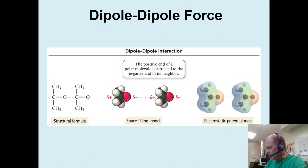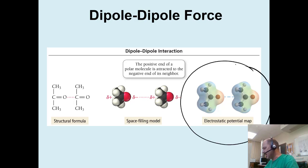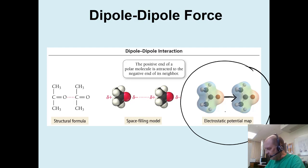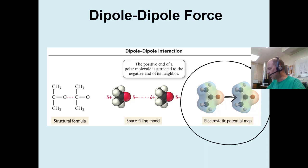Here are two acetone molecules drawn side by side. The best ones to look at are the two electrostatic potential maps, because you can really see how these two molecules orient themselves from the negative to the positive end. That's true for any kind of dipole-dipole interaction. So they stick to each other, and obviously you have more than two, so you get this network of molecules that are stuck to each other.